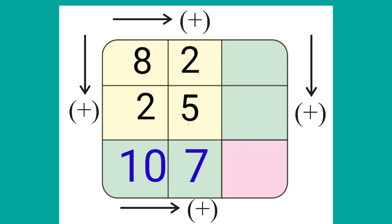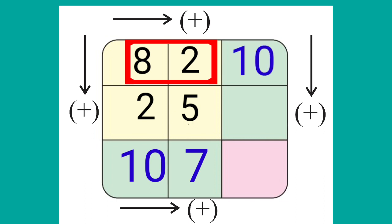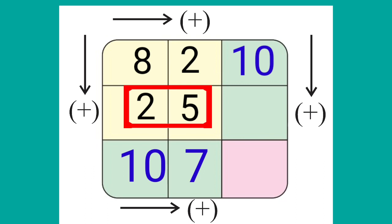Now we will add the digits from left to right in the first row. 8 plus 2 is equal to 10. And in the second row, 2 plus 5 is equal to 7.